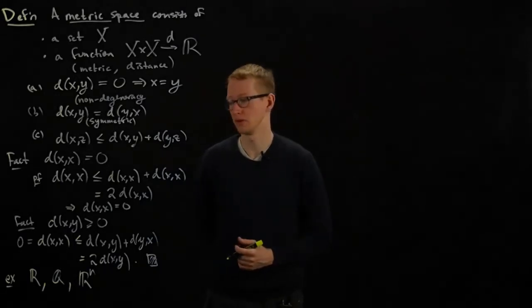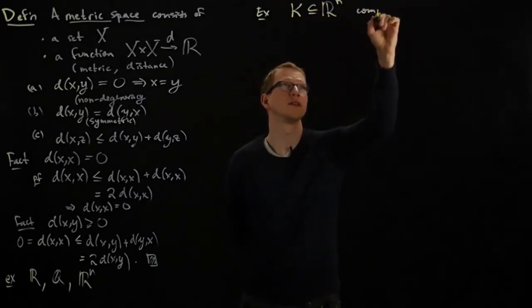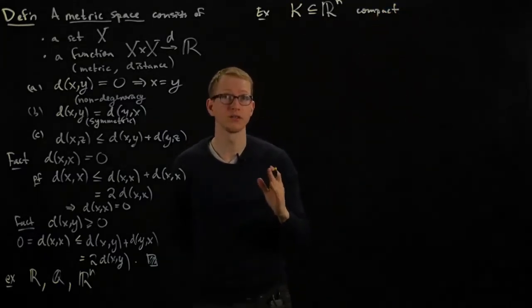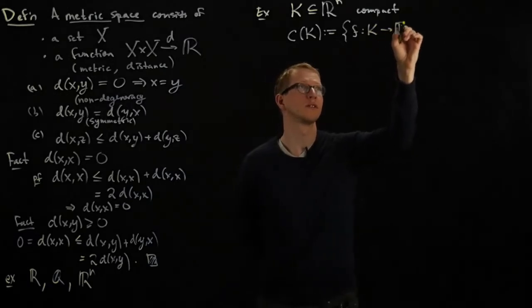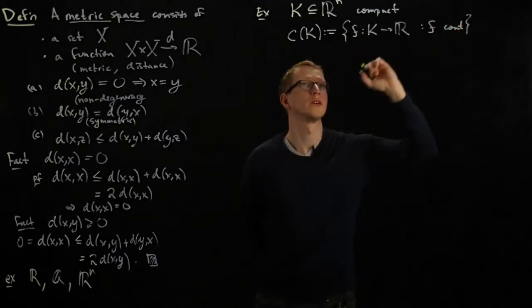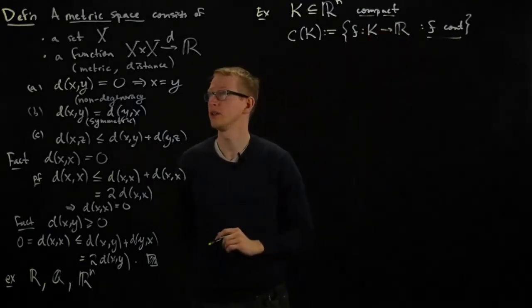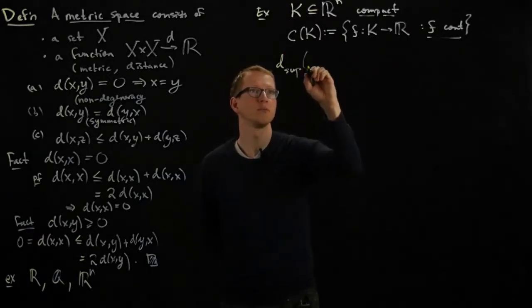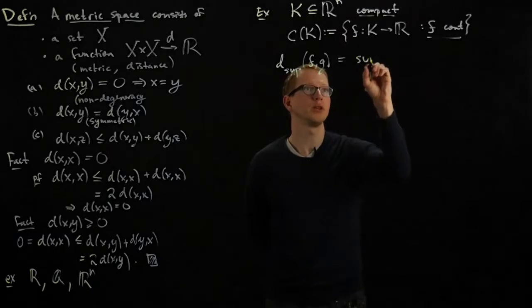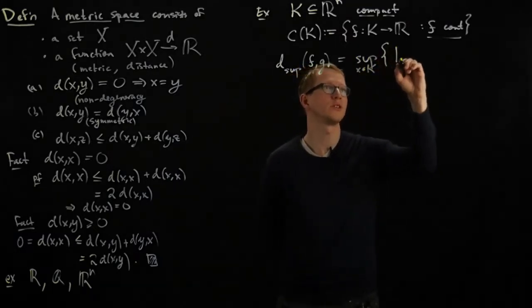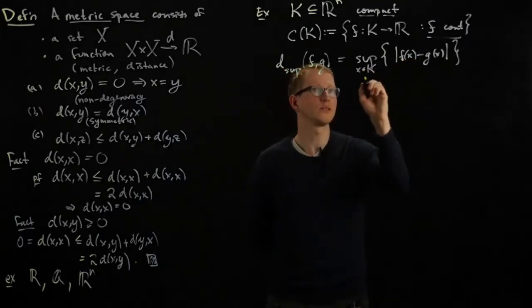But there are also more exotic examples, examples that don't just come from subsets of Euclidean space. For instance, if you have any compact subset of R^n, you can look at the set of continuous functions on that compact subset. With this assumption, and it's really important that we have a compact subset and a continuous function, we can define the distance, and we'll call this the sup distance, between two functions f and g, to be the maximum distance between these two functions. So it's the supremum over all x in K of the distance between those two functions, the pointwise distance in R.